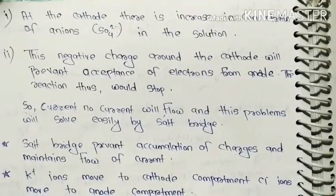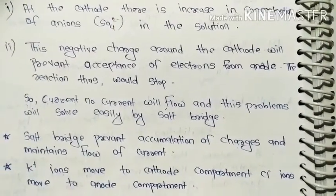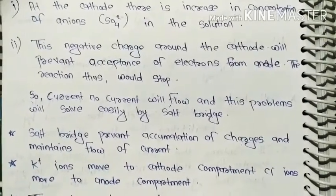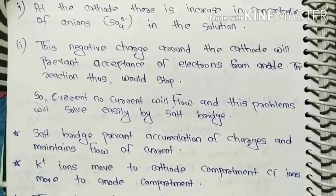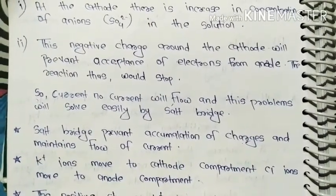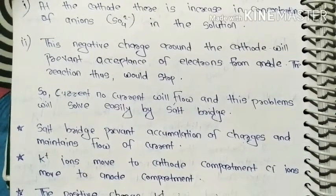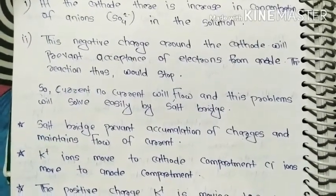At the cathode, there is increase in concentration of anions in the solution. This negative charge around the cathode will prevent acceptance of electrons from anode. The reaction thus would stop.